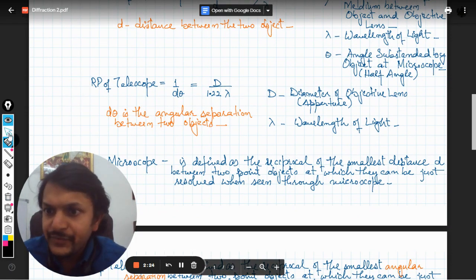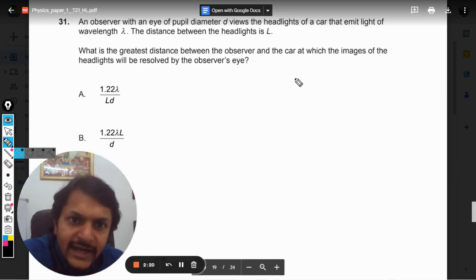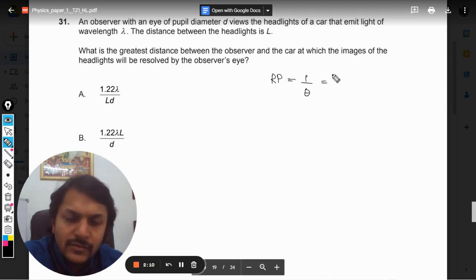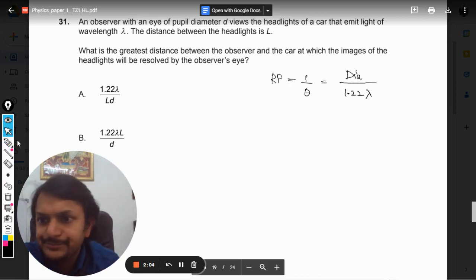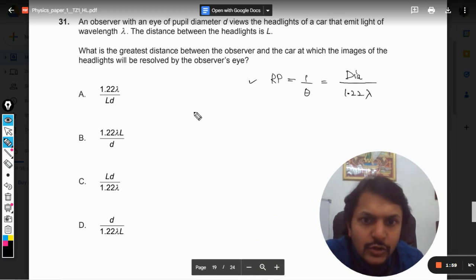Coming back to our question, I can say that the resolving power was given by 1 by theta is equal to the diameter divided by 1.22 lambda. This is the resolving power. What is this theta?